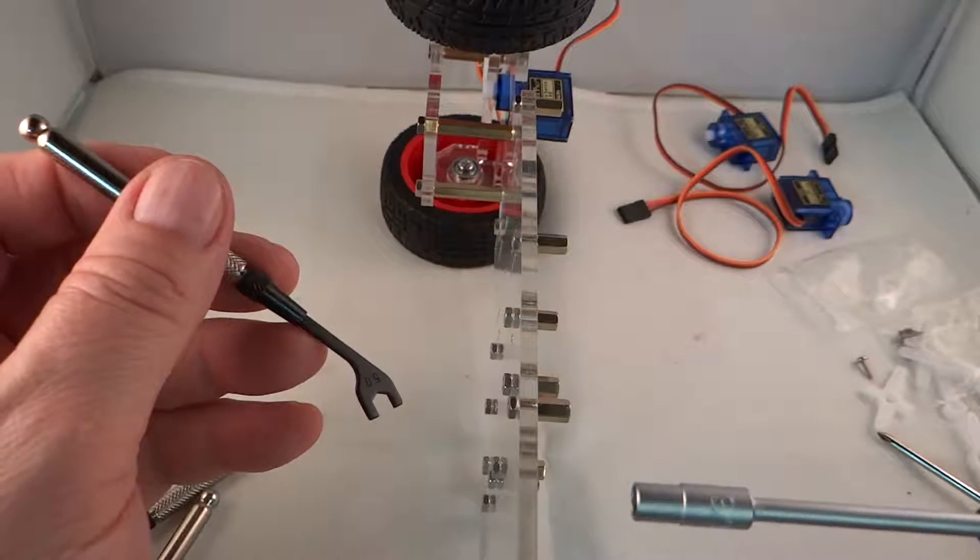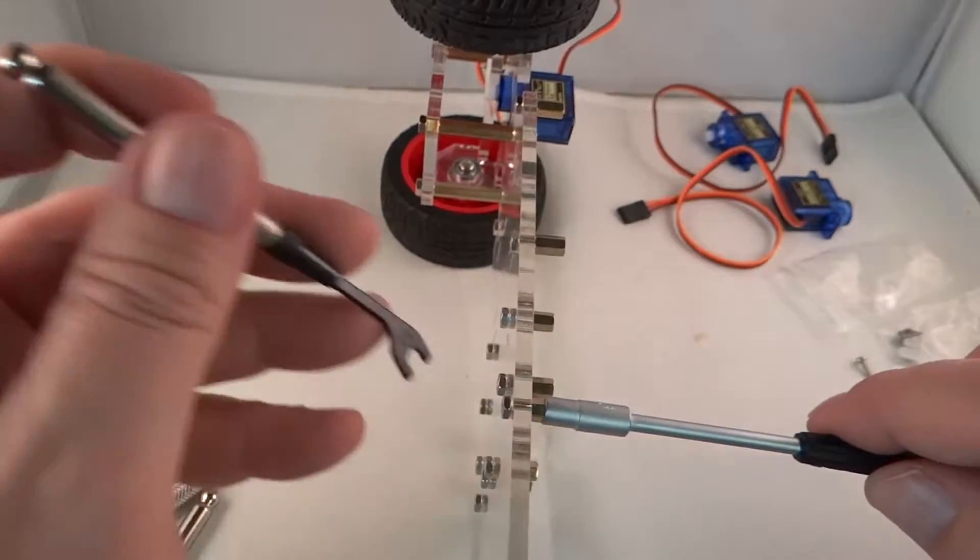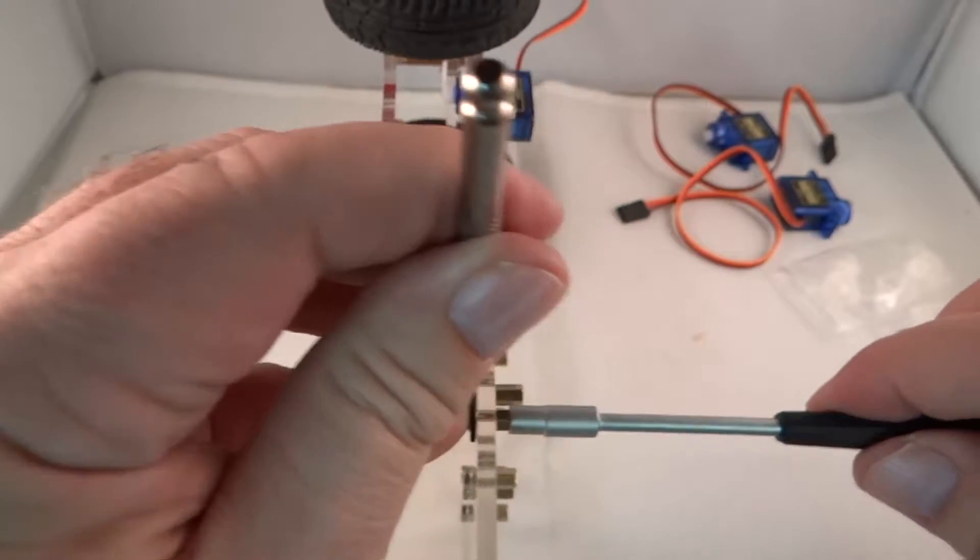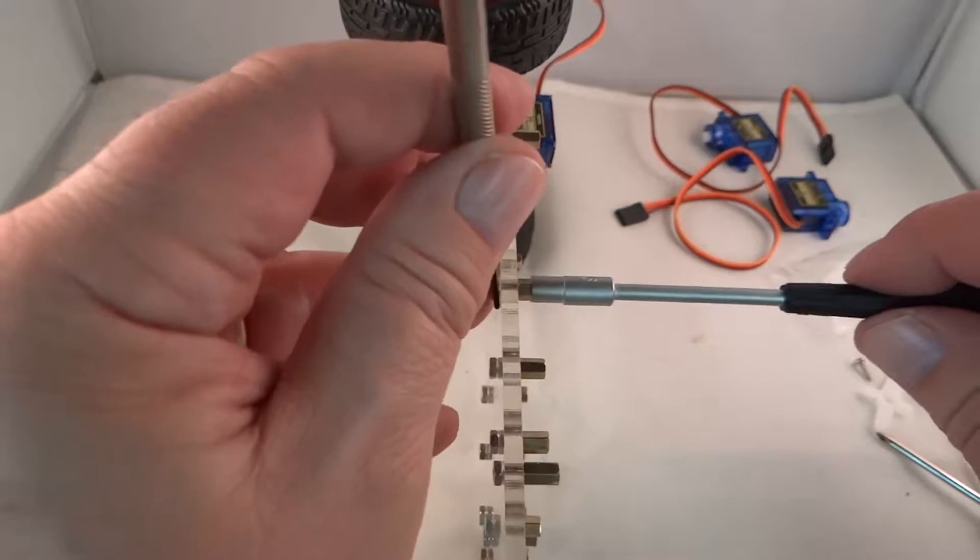Here I have my 3/16ths nut driver and my 5mm wrench. And then just go through and tighten all of these until they're good and tight.